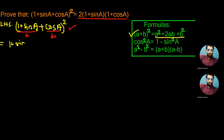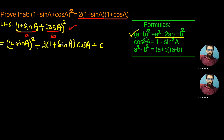One plus sine A whole square in place of a square, plus 2 times one plus sine A into cos A in place of 2ab, and cos square A in place of b square.